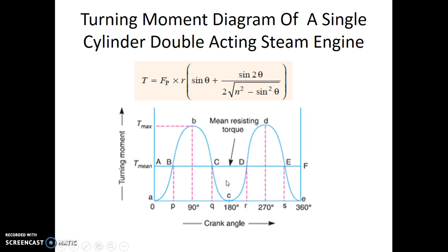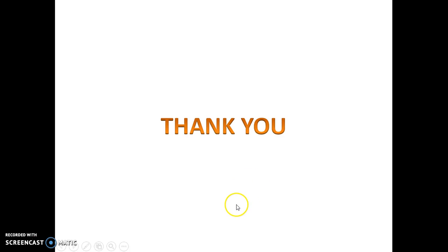This turning moment diagram can also be used to see the fluctuations of energy taking place on the crankshaft where the steam is doing work. We will learn further that the fluctuations of energy create variations of speed on the crank, and therefore the variations of speed need to be controlled. In our next topic, we will see how to keep this variation of speed within certain limits so that too much variation does not take place. Thank you.